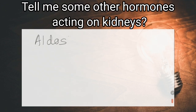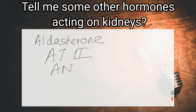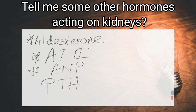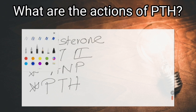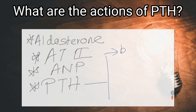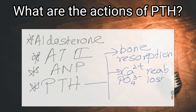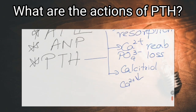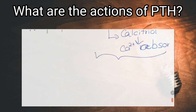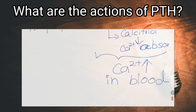Tell me some other hormones acting on the kidneys. Aldosterone, angiotensin 2, atrial natriuretic peptide, and parathyroid hormone. What are the actions of parathyroid hormone? It acts directly on bone to increase bone resorption and mobilize calcium. It increases phosphate excretion in urine, depressing plasma phosphate levels. It increases calcium reabsorption from tubular cells of the kidney, increases formation of 1,25-dihydroxycholecalciferol, and increases calcium absorption from the intestine, finally increasing plasma calcium levels.